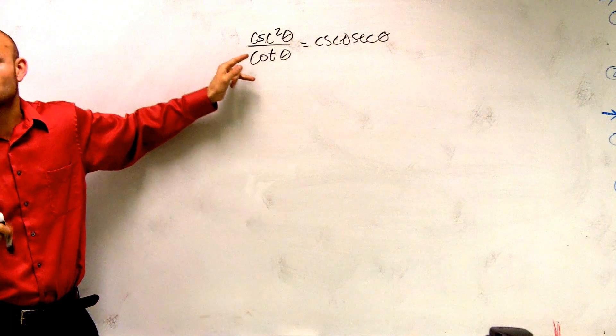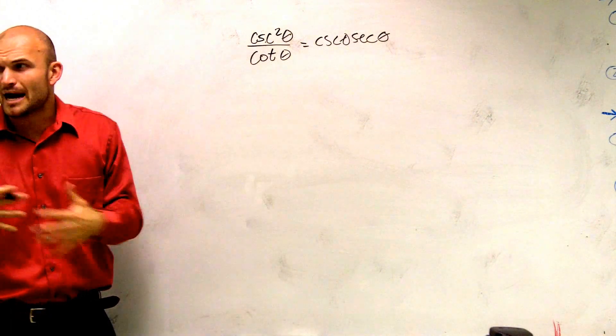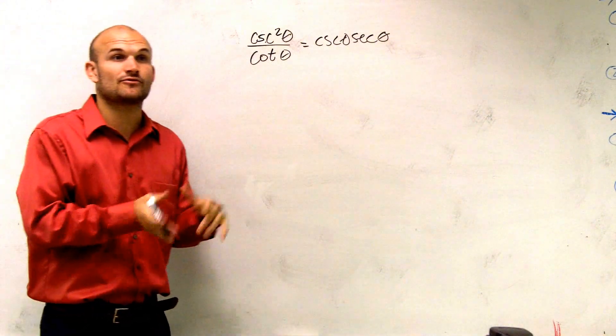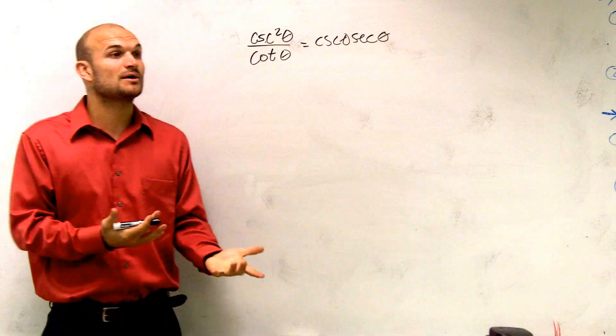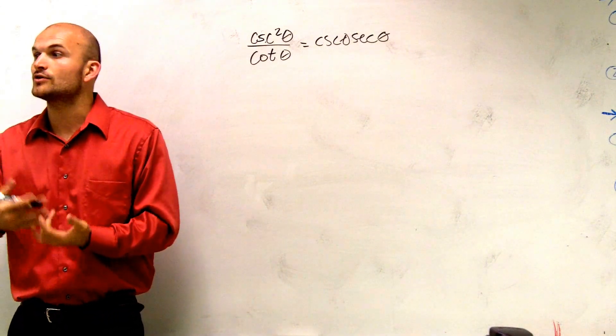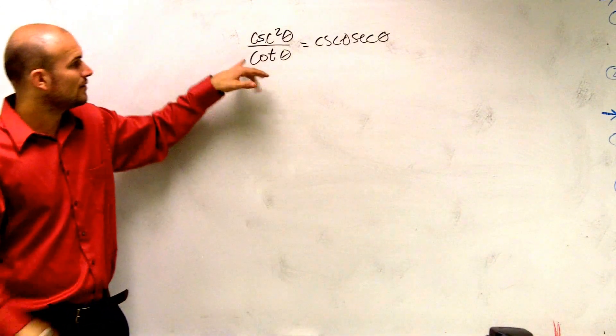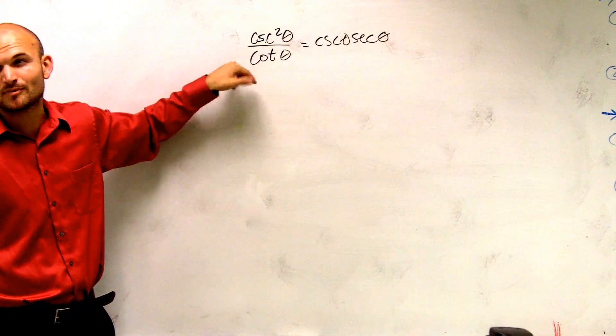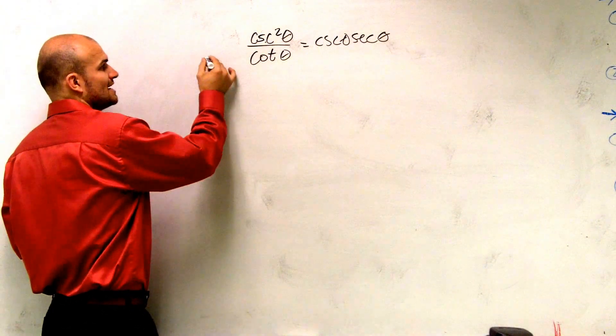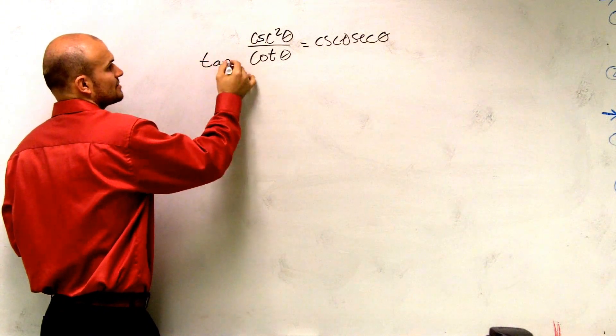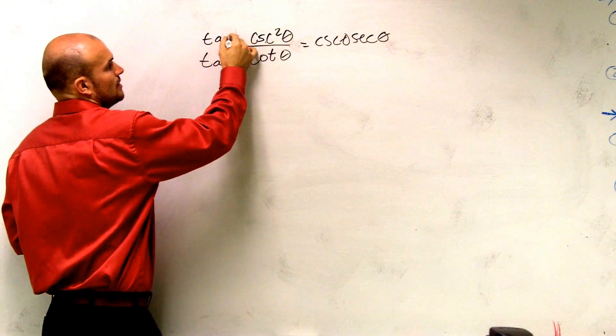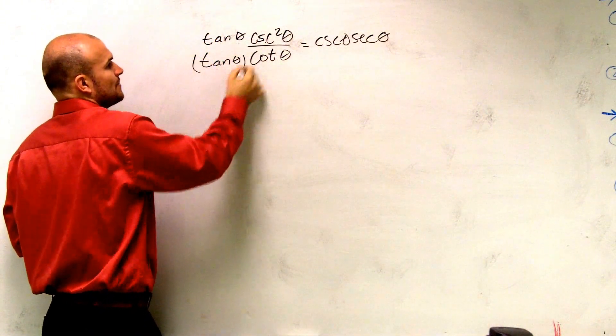So what I would do is first thing is I'm going to get rid of this fraction. So you guys remember, how do we get rid of our fraction, right? We always get rid of what's on the bottom by multiplying by the reciprocal. So if cotangent is on the bottom, to get rid of that, I need to multiply by the reciprocal. The reciprocal of cotangent is tangent of theta. So I multiply tangent of theta on the top and the bottom.